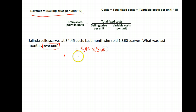She sold 1,360 scarves, so we calculate four dollars and forty-five cents times 1,360. The revenue here would have been six thousand and fifty-two dollars.